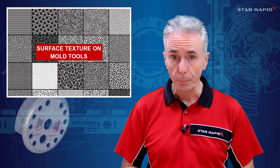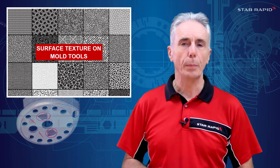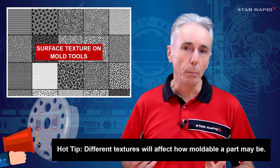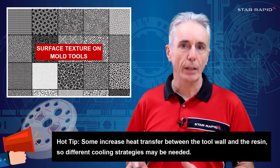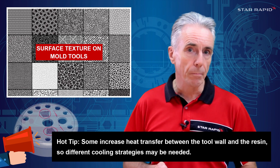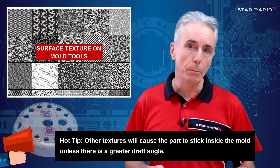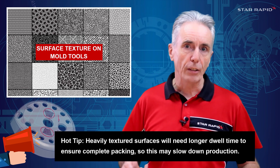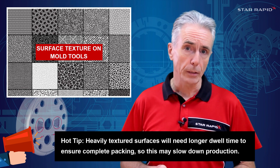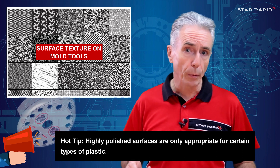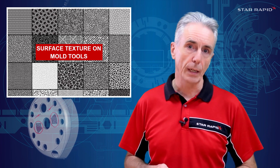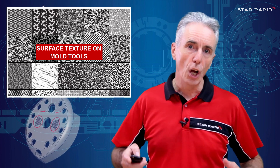So what are the implications for you? Surface textures on mold tools are important for reasons that go beyond aesthetics. Different textures will affect how moldable a part may be. Some increase heat transfer between the tool wall and the resin, so different cooling strategies may be needed. Other textures will cause the part to stick inside the mold unless there's a greater draft angle. Heavily textured surfaces will need longer dwell time to ensure complete packing, which may slow down production. And highly polished surfaces are only appropriate for certain types of plastic. So to get the best results, it's important to perform a comprehensive design for manufacturing consultation early in the development stage.